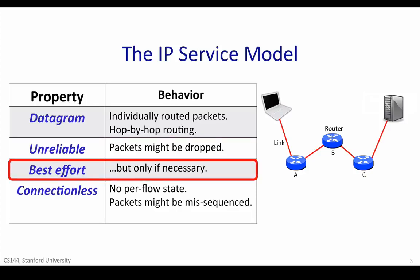But it won't drop datagrams arbitrarily. IP does make the promise to only drop datagrams if necessary. For example, the packet queue in a router might fill up because of congestion, forcing the router to drop the next arriving packet. IP won't make any attempt to resend the data. In fact, IP doesn't even tell the source that the packet was dropped. Similarly, a faulty routing table might cause a packet to be sent to the wrong destination, or cause a packet to be duplicated by mistake. IP doesn't make any promises that these errors won't happen, nor does it detect them when they do. But IP does make the promise to only make these errors and drop packets when necessary.